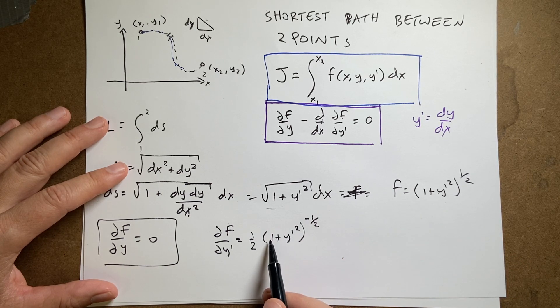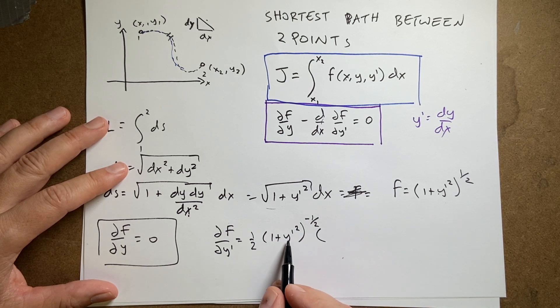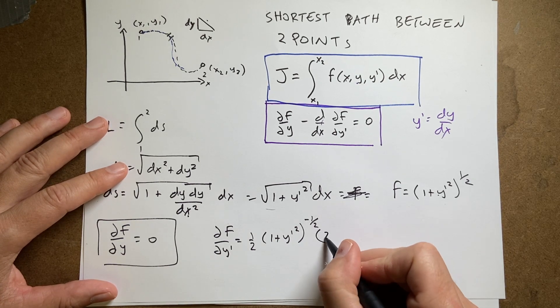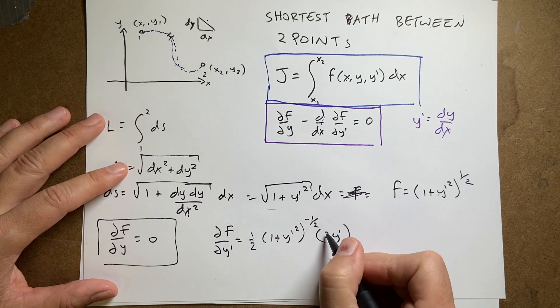Right? I have to decrease that by the power of 1. Now, I have to take the derivative of the stuff inside. The derivative of 1 is 0. The derivative, the partial, of y prime squared is going to be 2 y prime. And the 2's cancel.